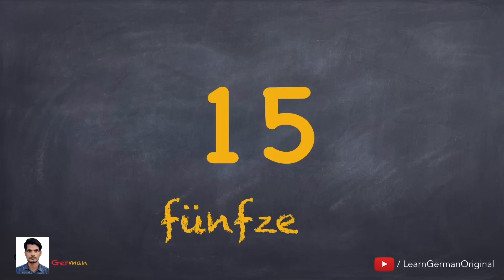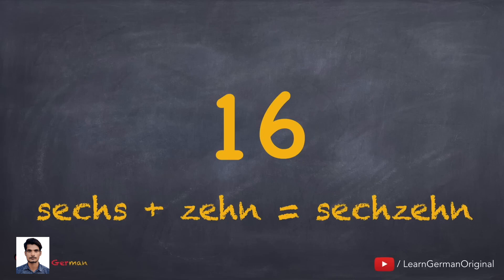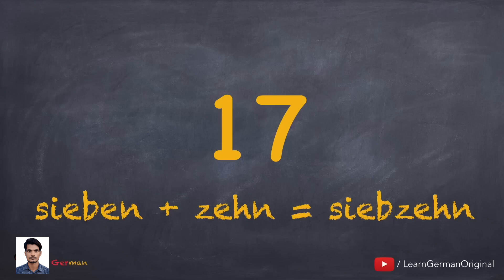Can you guess the next one? Fünfzehn. In the case of 16, you do bring Sechs and zehn together, but Sechs is used without the S — this is to make the pronunciation easier: Sechzehn. The next number is slightly exceptional: instead of Siebzehn, you say Siebzehn — you remove the EN from Sieben and add it to zehn.